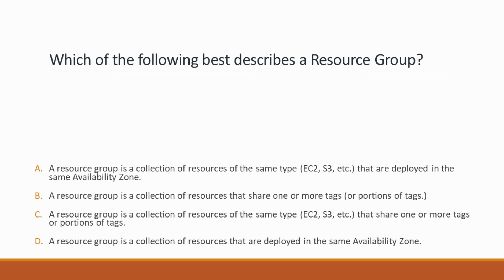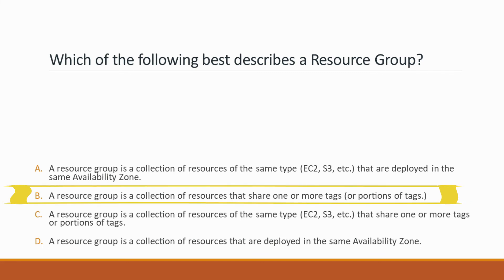Next question: Which of the following best describes a resource group? Options: A. A collection of resources of the same type deployed in the same availability zone, B. A collection of resources that share one or more tags or portions of tags, C. A collection of resources of the same type that share one or more tags, D. A collection of resources deployed in the same availability zone. Correct answer is option B, because a resource group is a collection of resources that share one or more tags.